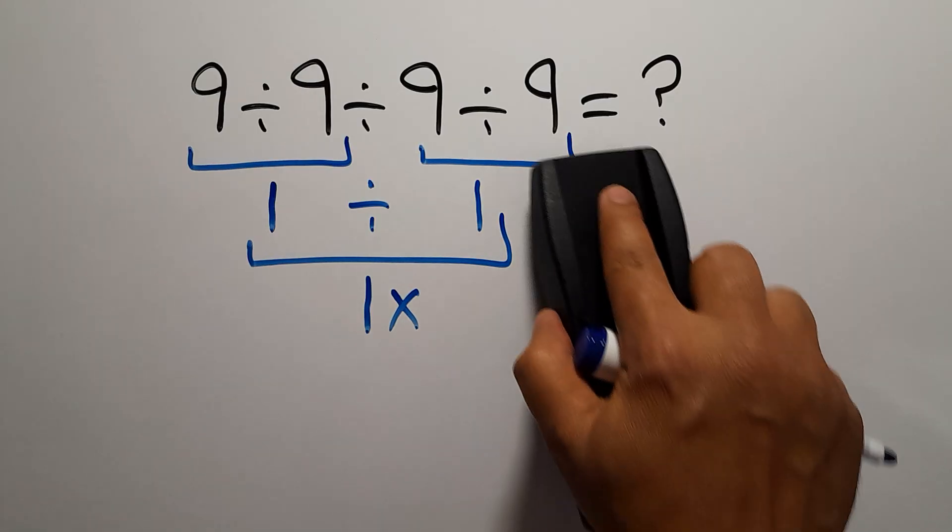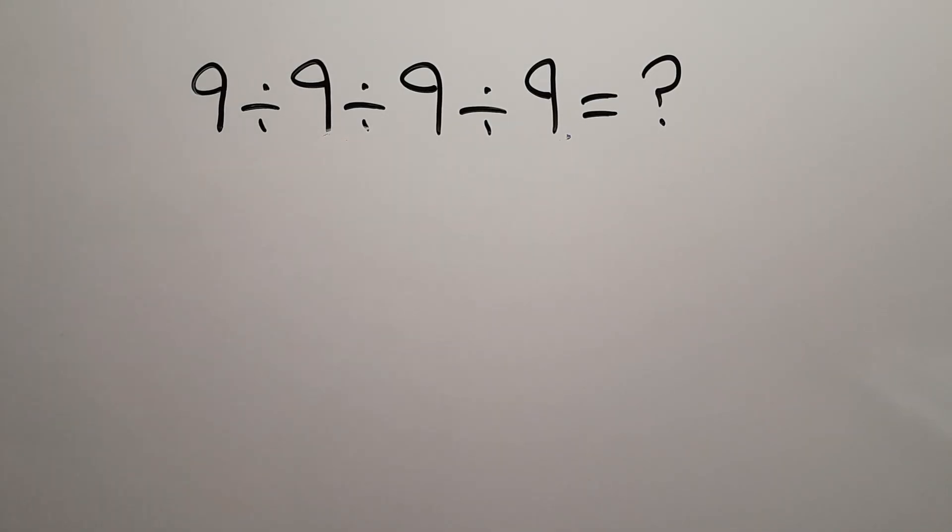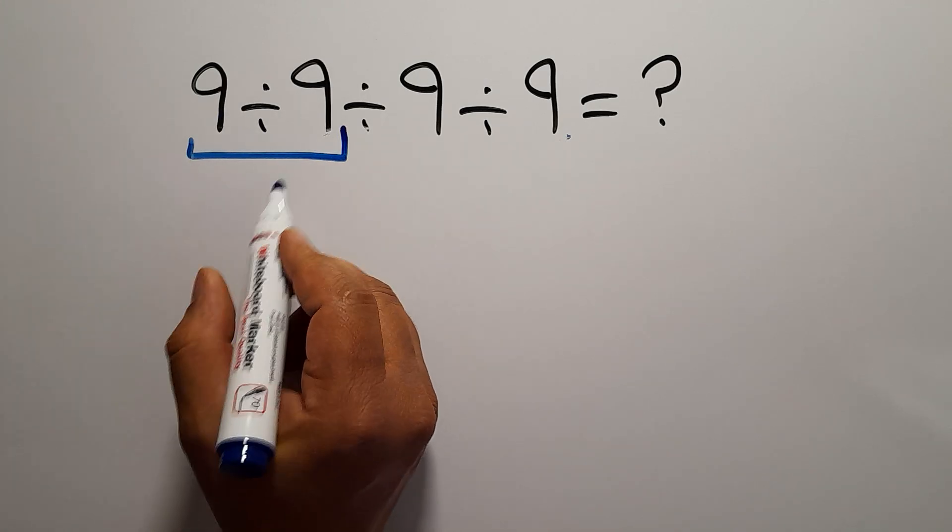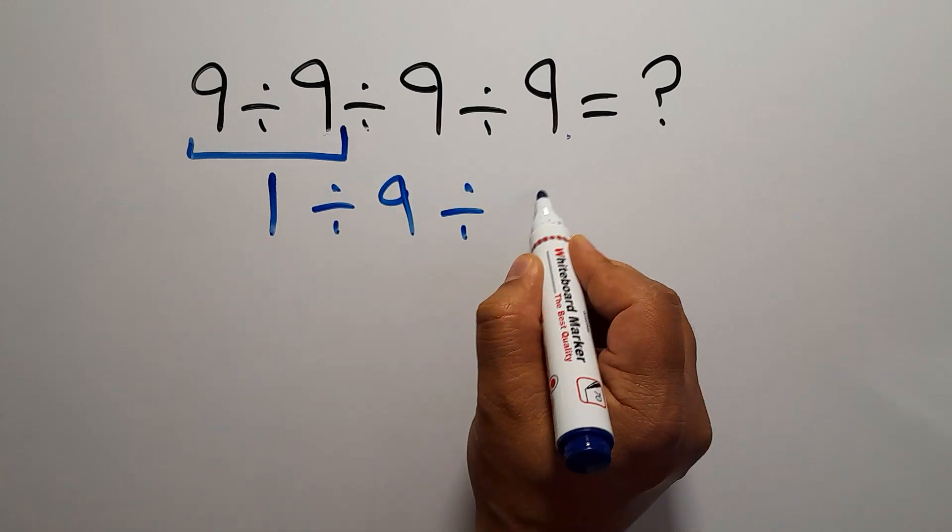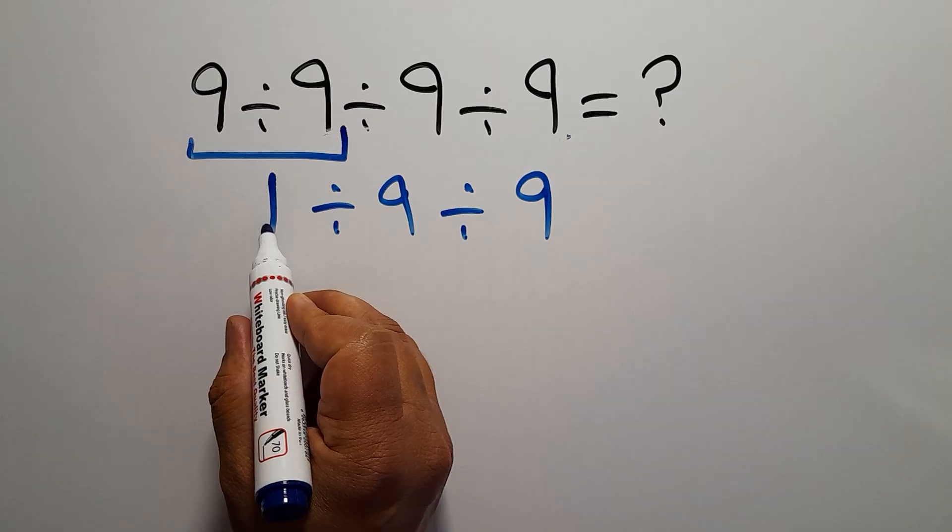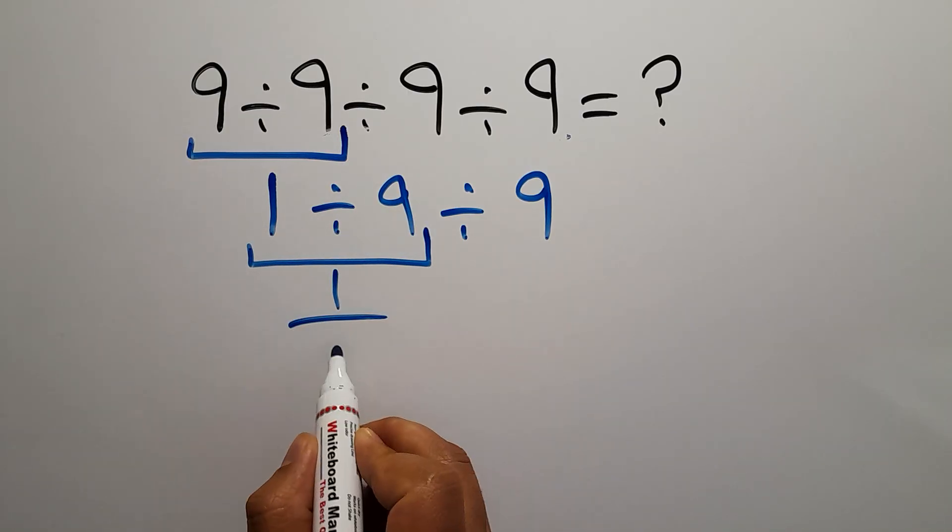Okay, so first 9 divided by 9 which equals just 1, so 1 divided by 9 and again divided by 9. Now we have to do this division. 1 divided by 9 can be written as 1 over 9, then divided by 9.